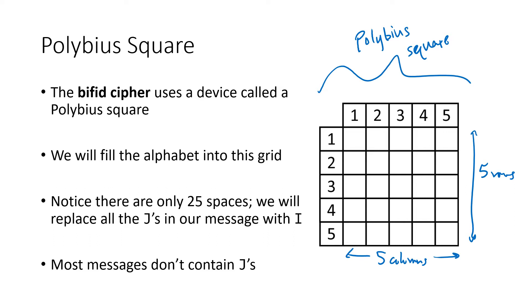Most messages don't contain the letter J — it's a pretty rare letter in English. And even if the message does have a J, when we decode and see an I in place of a J, the message will still be pretty readable.